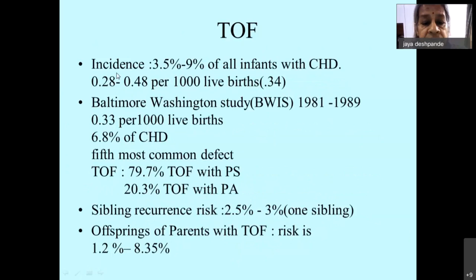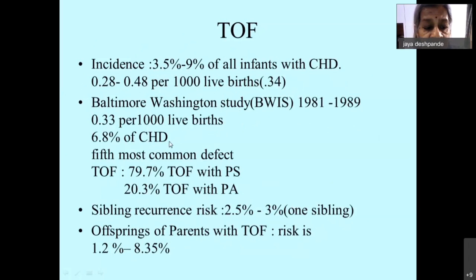TOF is seen in 0.28 to 0.48 per thousand live births and constitutes 3.5 to 9 percent of all congenital heart diseases. The Baltimore-Washington study showed it constitutes 6.8 percent of congenital heart disease. It is believed to be the fifth most common defect.